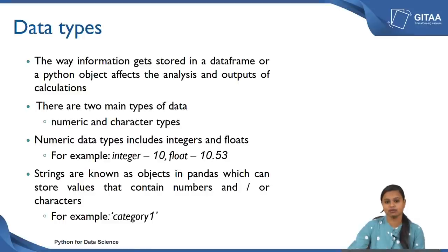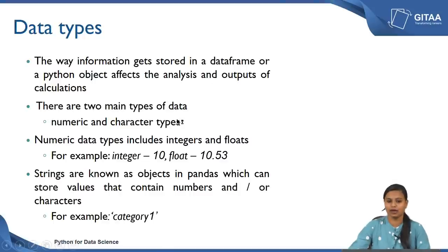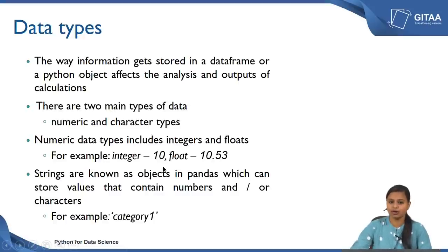Next we are going to look at character types. Character data types are nothing but strings, which are known as objects in pandas. These can store values that contain numbers as well as characters. Whatever value is enclosed inside single or double quotes will be considered as a string and is represented as object in pandas. For example, 'category1' becomes a string value or an object.